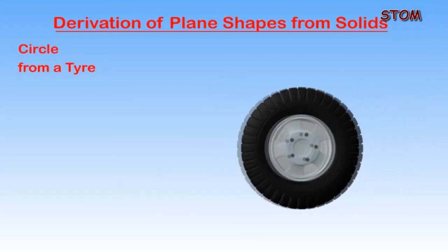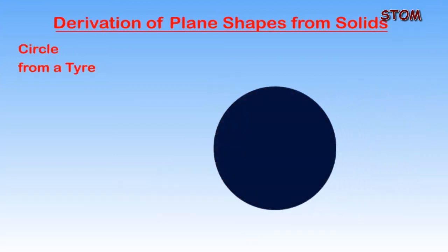The tires used for vehicles are circular in shape, and a circle can be derived from its surface.